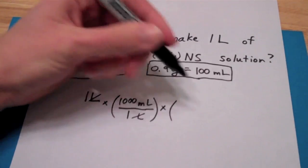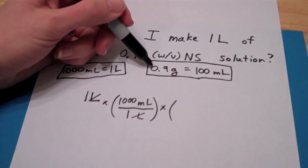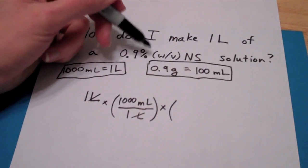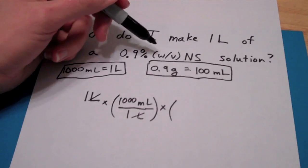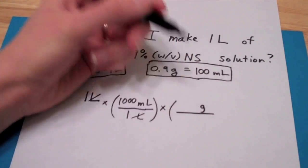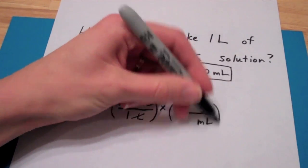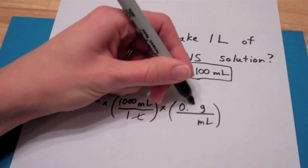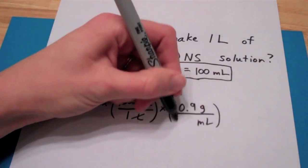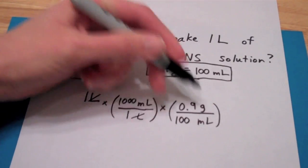So now I have milliliters. Now I can use this concentration given from the percentage to be able to get grams of that salt. There are 0.9 grams in every 100 milliliters.